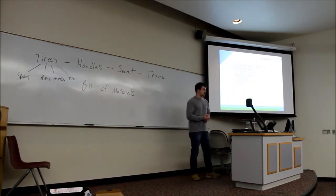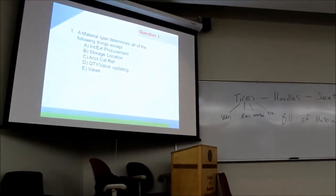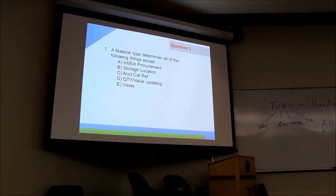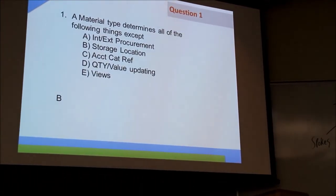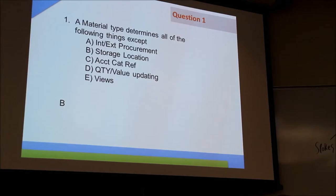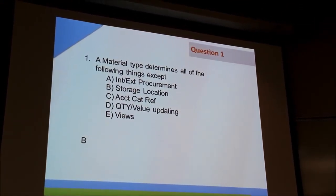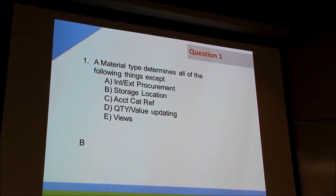So, first multiple choice question. The material type determines all the following things except. Do we have some answers? Is it B? She is right. The only thing that the material type does not determine is the storage location. It does, however, determine the internal or external procurement, the account category reference, its quantity and value updating, and the views that are available.